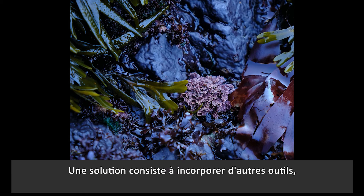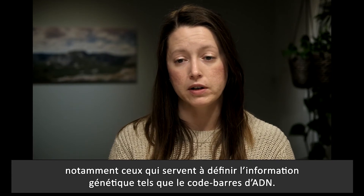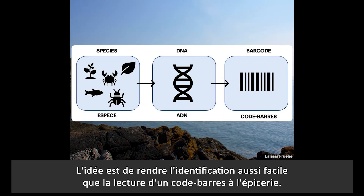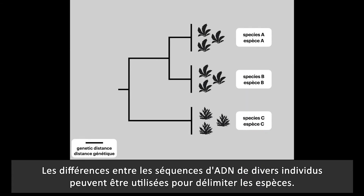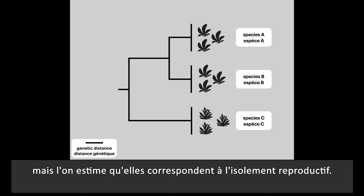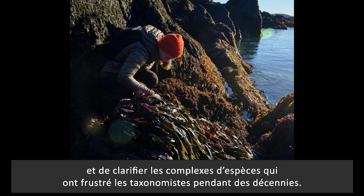One solution is to incorporate other tools to help, such as those that rely on genetic information. One of these tools is called DNA barcoding and uses a short standardized section of DNA in order to identify species. The idea is to make identification as easy as scanning a barcode at the grocery store. The differences between DNA sequences between individuals can be used to delineate species. These sequences do not always correspond to the morphological characters used by taxonomists, but the assumption is that they do correspond to reproductive isolation. Using a combination of both genetic and morphological evidence can reveal overlooked biodiversity and clarify species complexes that have frustrated taxonomists for decades.